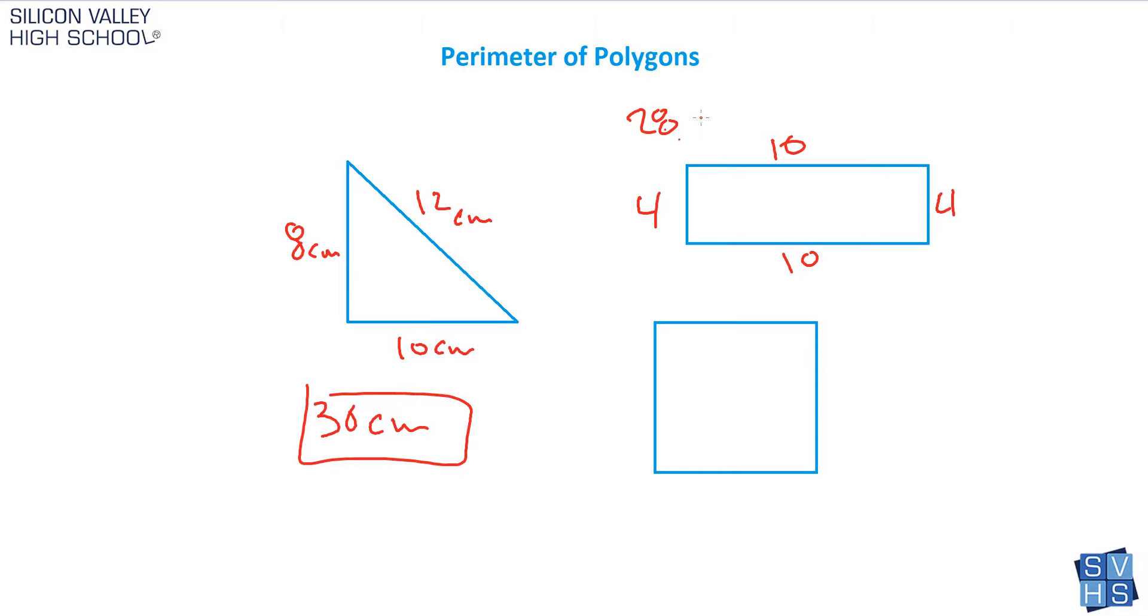If there's no units, don't stress about it, but if they do give you the units, then you just write them. Maybe this is meters. When you're finding area, you multiply and get units squared. When you're doing volume, you multiply and get units cubed. Don't forget, for perimeter it's just straightforward—it's just units.